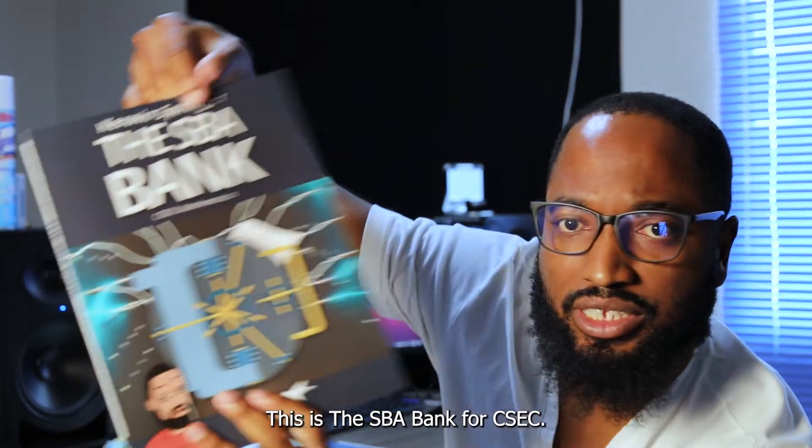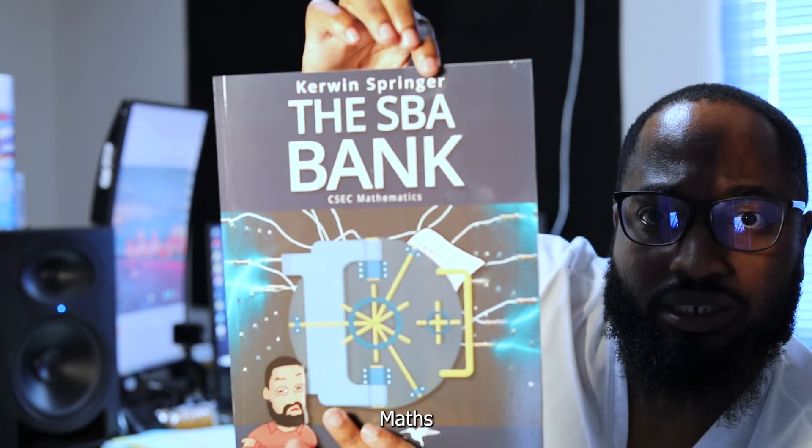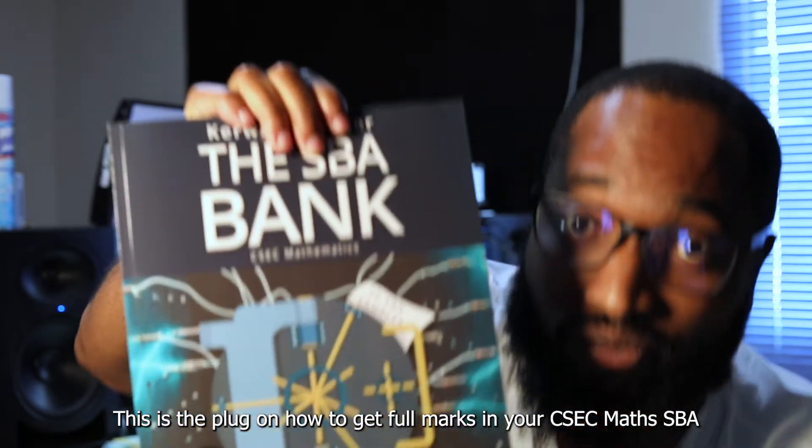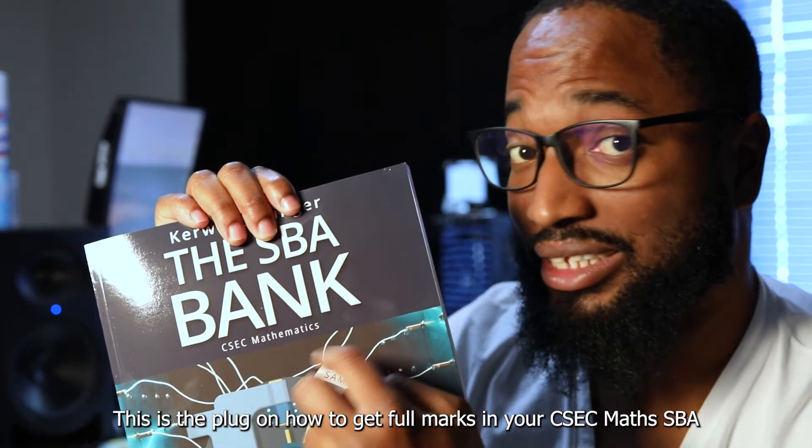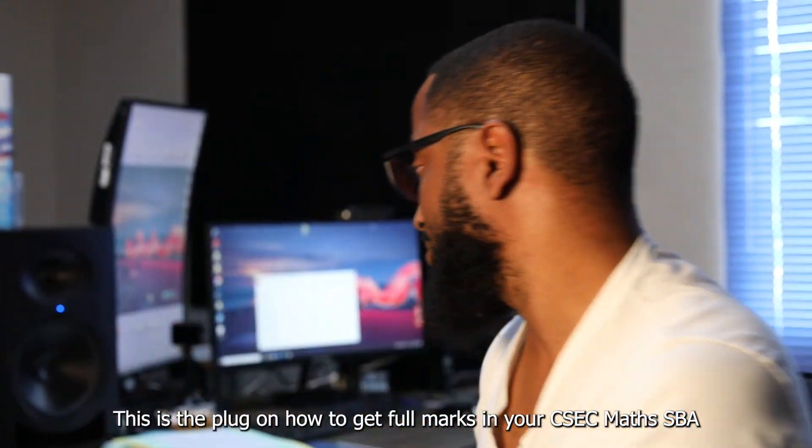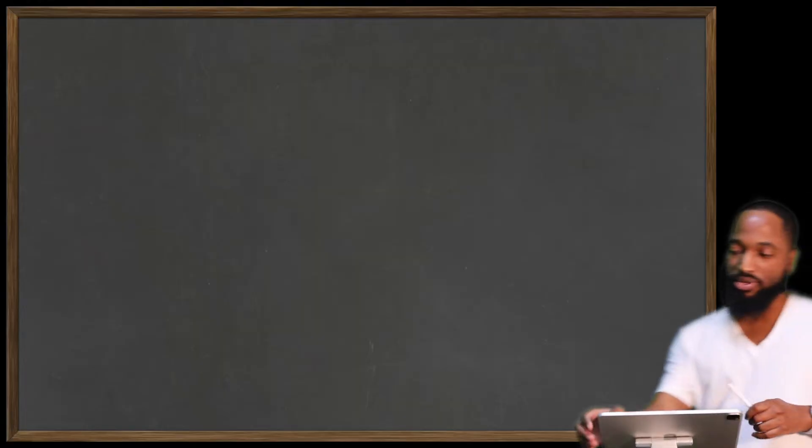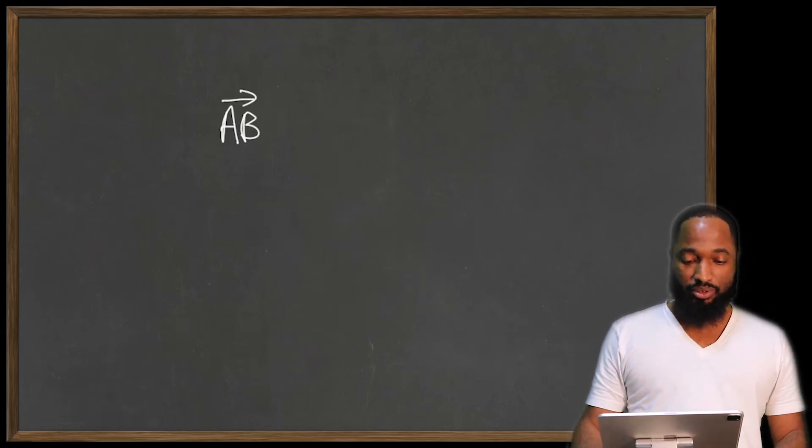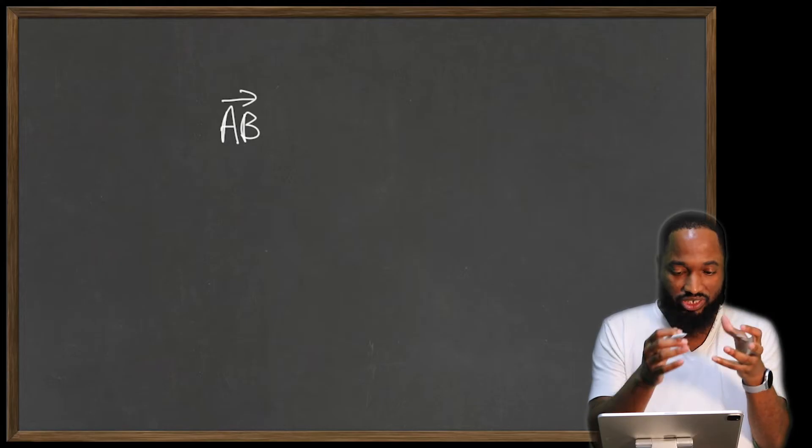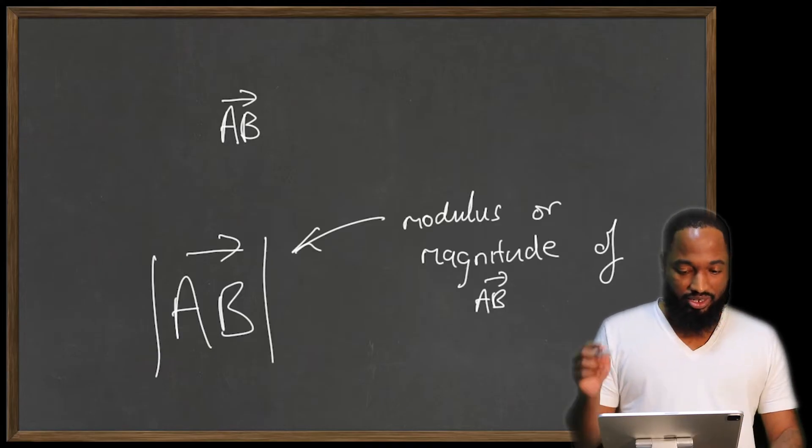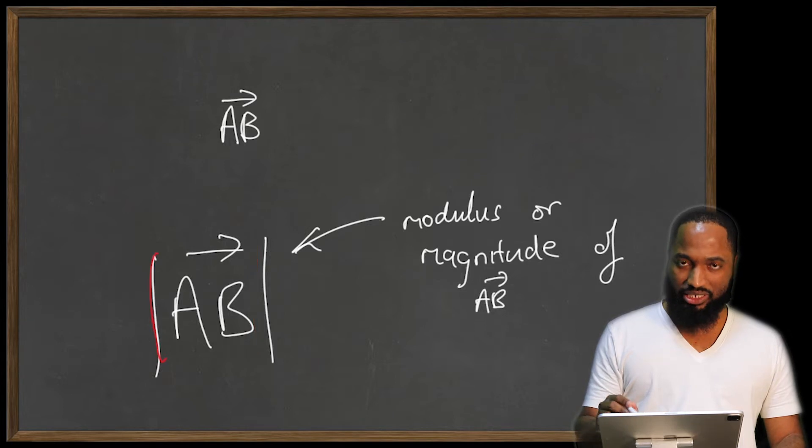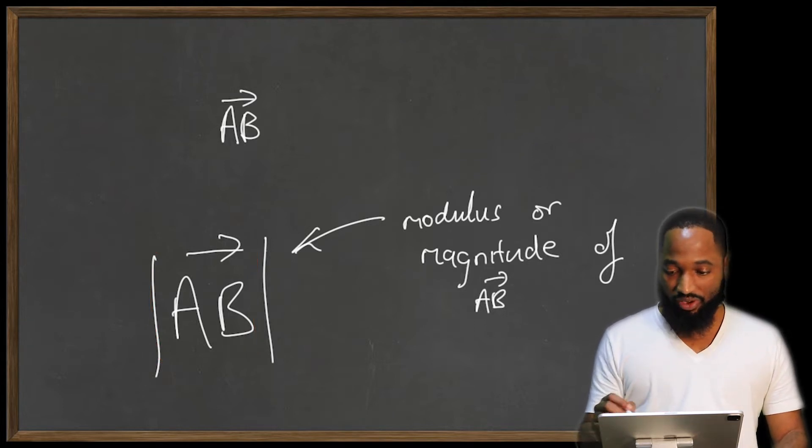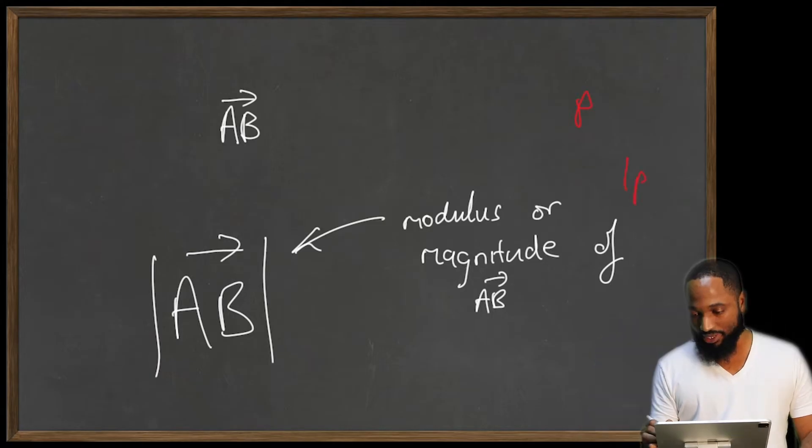This is the SBA bank for CSEC maths. So it basically means how long the magnitude of a vector means, the size, the raw size of a vector. For example, before we do that, if the vector is in the notation AB, then we use this symbol. You all remember this? This is like the modulus sign, the magnitude of a vector. Or if the vector is like P, then you say the modulus of P, if the vector is a common letter like that. So this is the symbol we use.